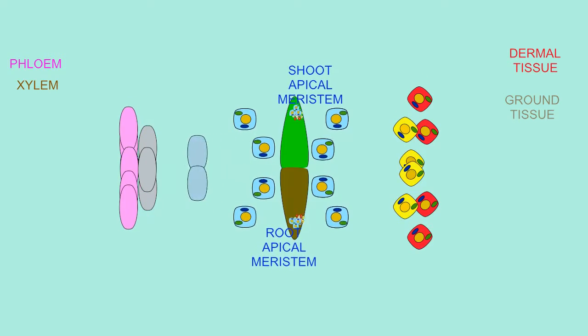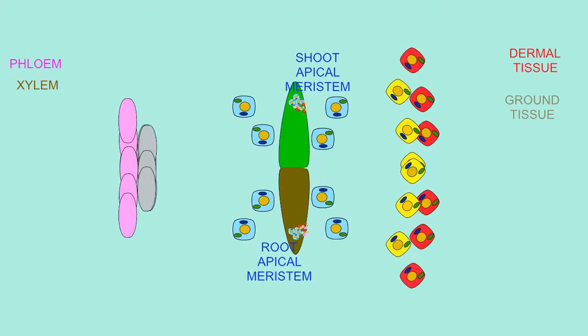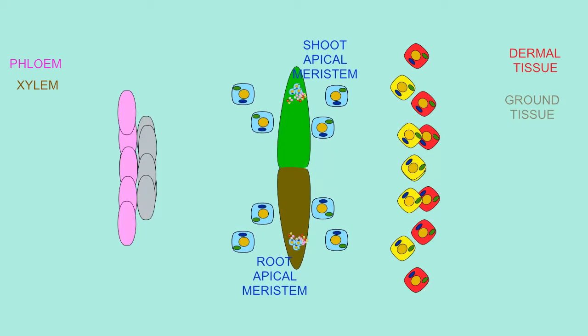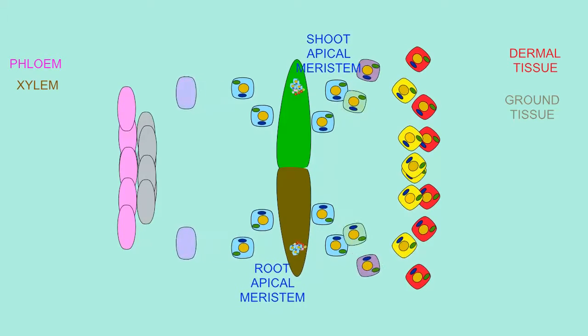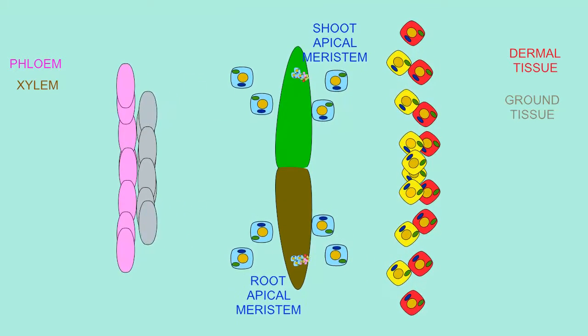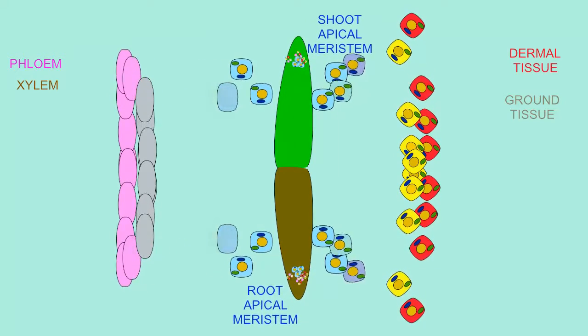There is a shoot apical meristem at the tip of the shoot and a root apical meristem at the tip of the root, covered by a root cap for protection. It is here that cell division occurs, allowing the plant to increase in height above ground and increase the length of the roots.